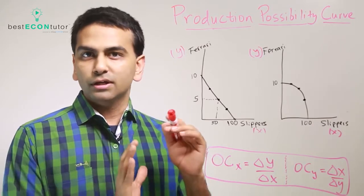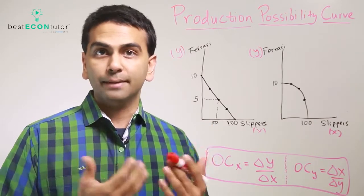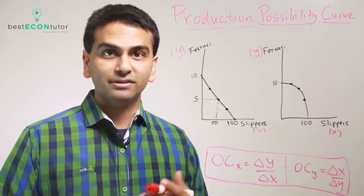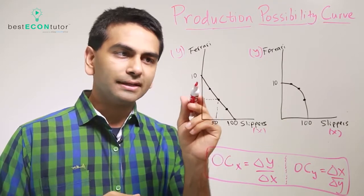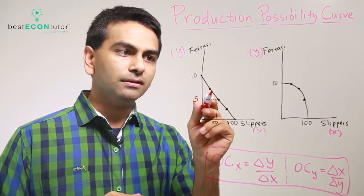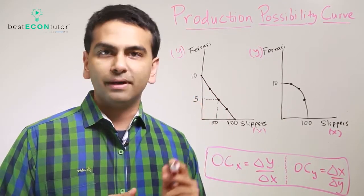If you were to graph all the points that you can produce, that it's possible to produce, that's your production possibilities curve. If we look at this graph, these points would be the production possibilities curve.